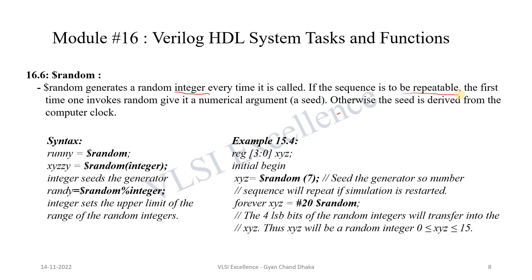So let's first see the syntax. The syntax of $random is to basically call this system task with some variable, and that variable is going to get the random value. This is one way of calling $random without any seed value. In the second method, we are calling $random with an integer seed value and the random value generated will be assigned to variables like HY, GG, and Y.